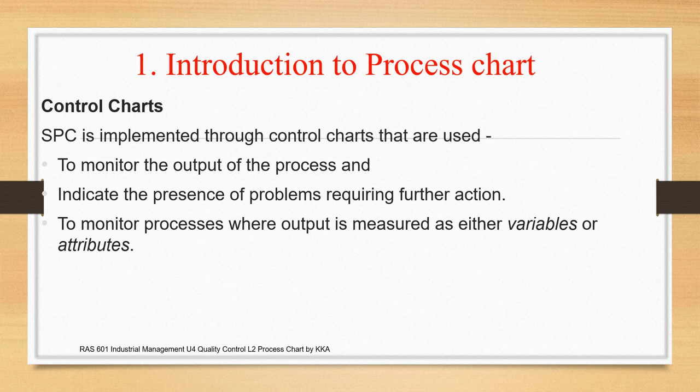To start with the topic: Process Chart is one of the statistical techniques used to study statistical quality control. These charts are used to monitor the output of the process as well as to indicate the presence of a problem, if any. If a problem arises, then it is required to take further action to remove it. Control Charts are used to monitor the process where output is measured in terms of either variable or error.